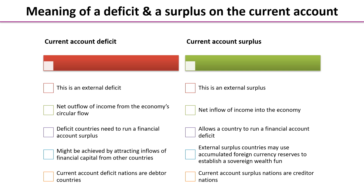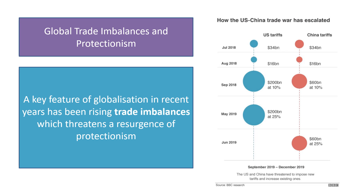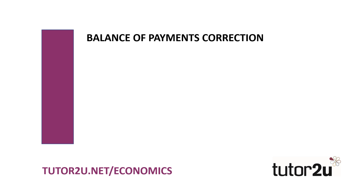The opposite of course is true for a current account surplus. One of the things that can happen when there are significant imbalances is greater calls for protectionism, and we've seen that over recent years. This infographic from the BBC explains how the US-China trade war escalated through 2018 and 2019. That's an end to this first introductory video.